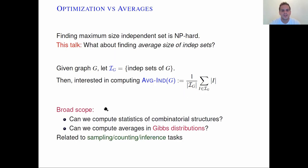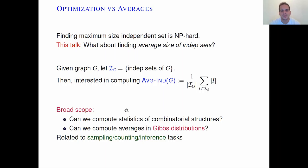This problem is connected to sampling, counting, and inference tasks, in particular to the problem of whether we can compute statistics of combinatorial structures. Another perspective, which we are going to adopt for this talk, is whether we can compute averages in Gibbs distributions.